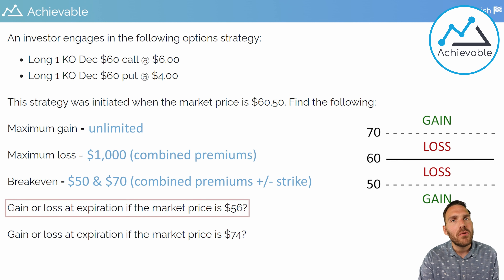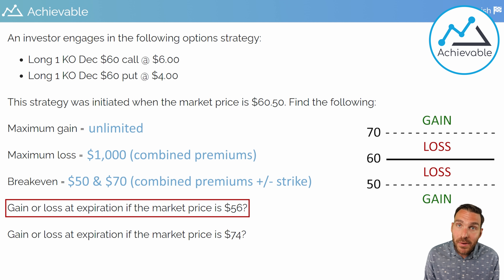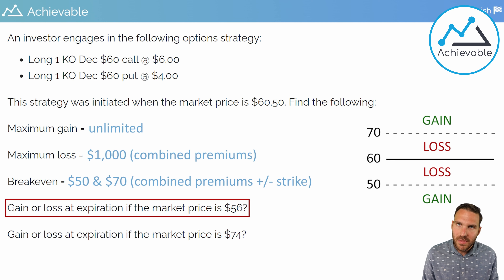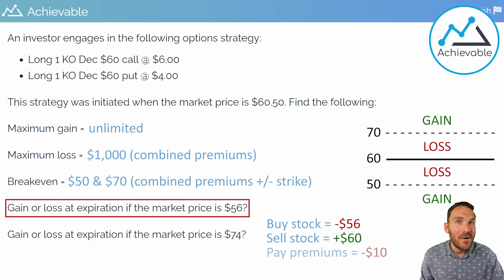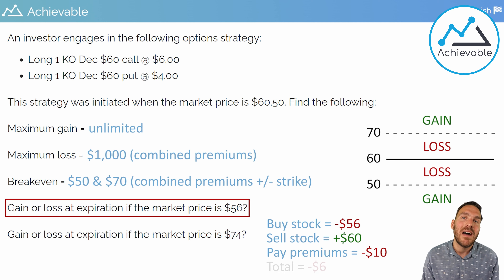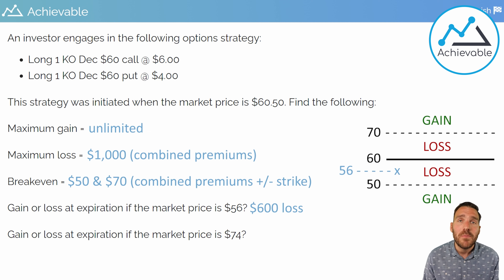What would be the gain or loss if the market price goes to 56 at expiration? Is the call in the money? No — market price is not above 60. Is the put in the money? Yes — 56 is below 60, so the put will be exercised. The investor buys stock at 56, exercises the put to sell at 60, making a $4 profit on the exercise. That $4 profit is offset by the $10 premium paid up front, leaving a $6 per share loss, or $600 overall. You can also count six points above the 50 break-even — confirming a $600 loss.